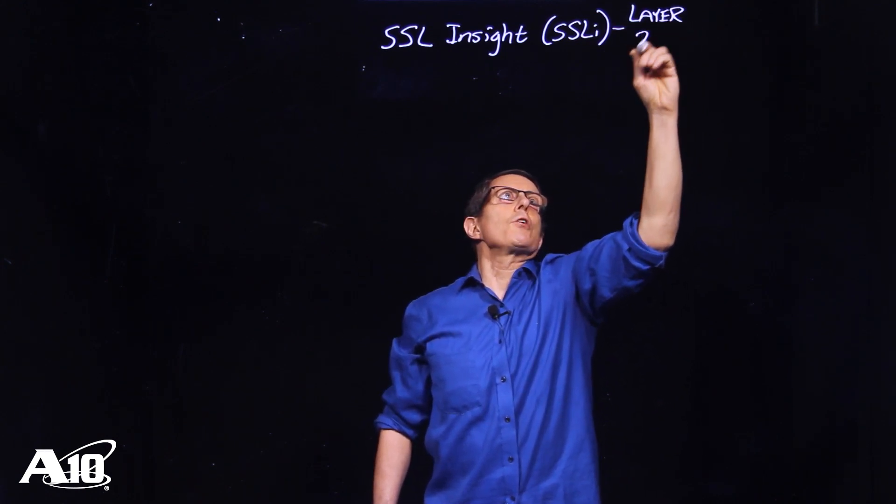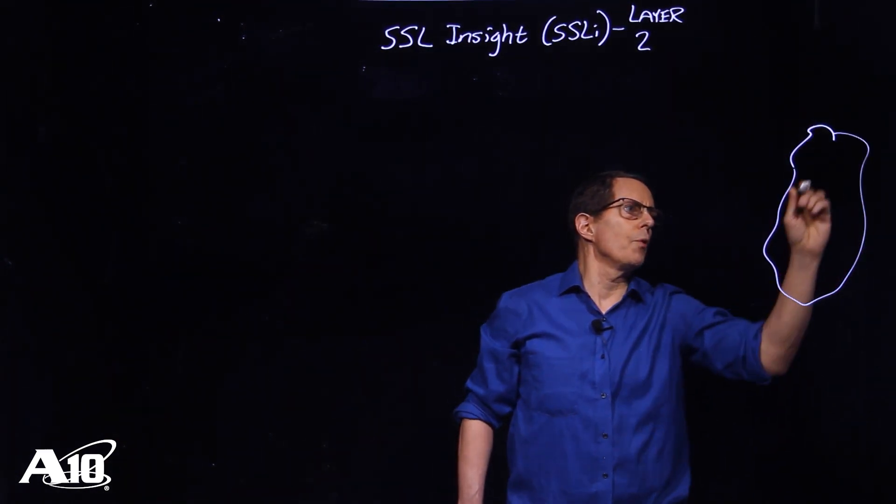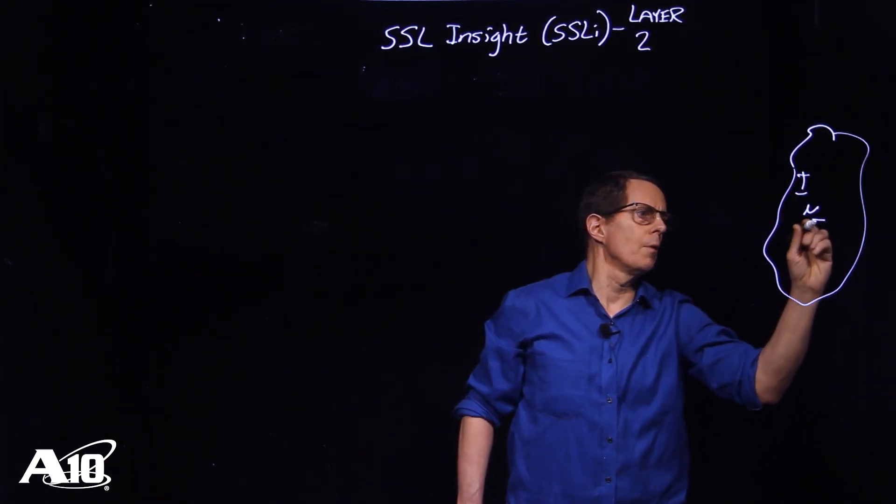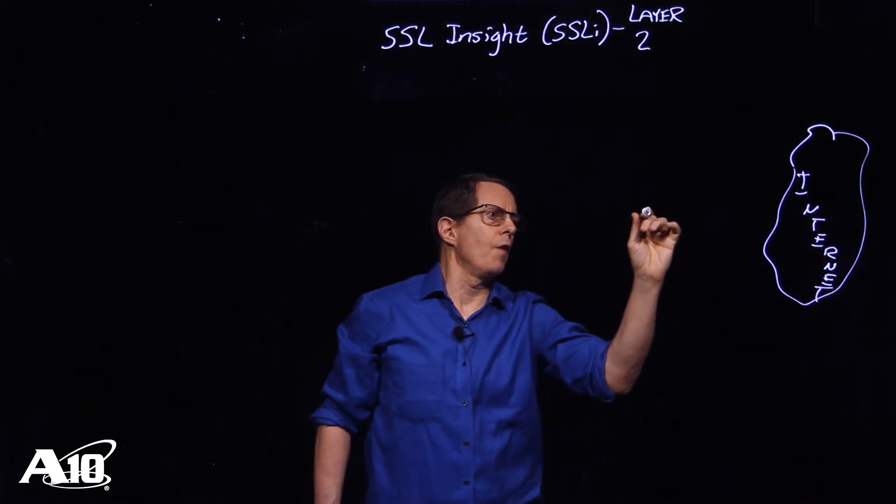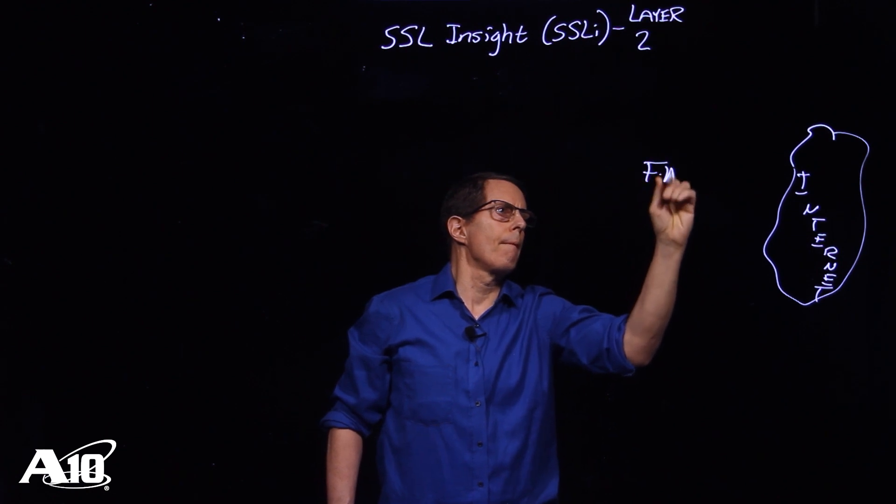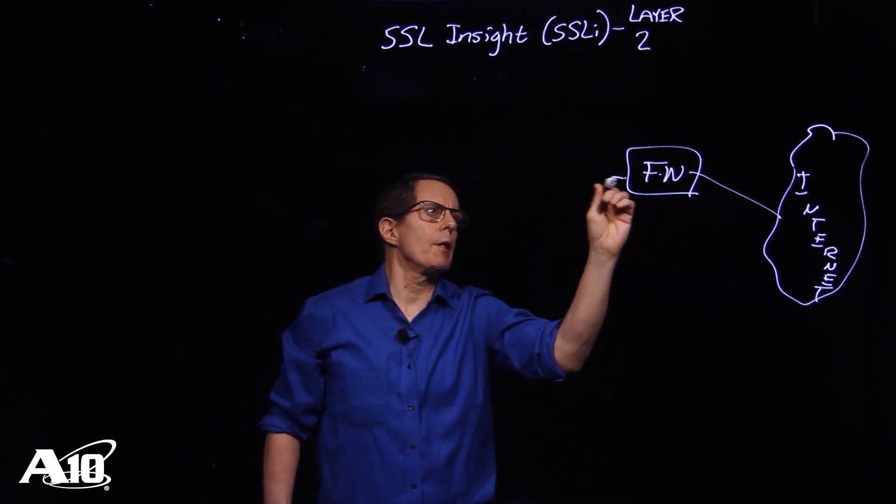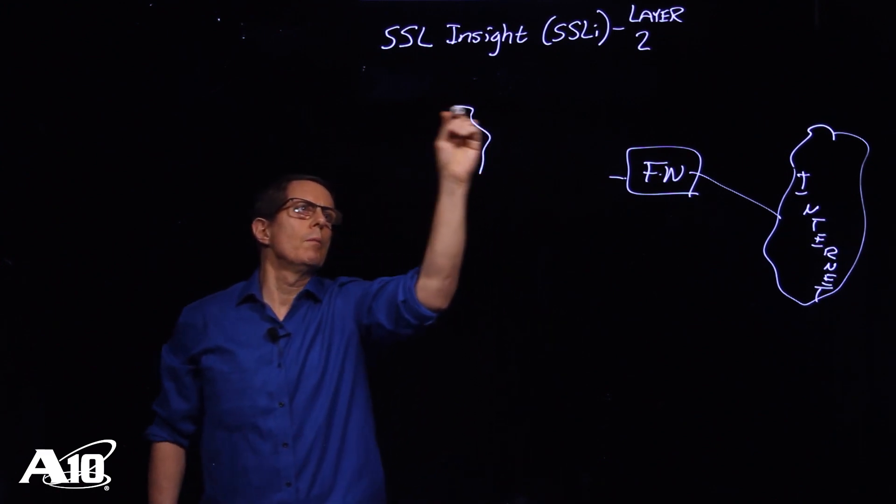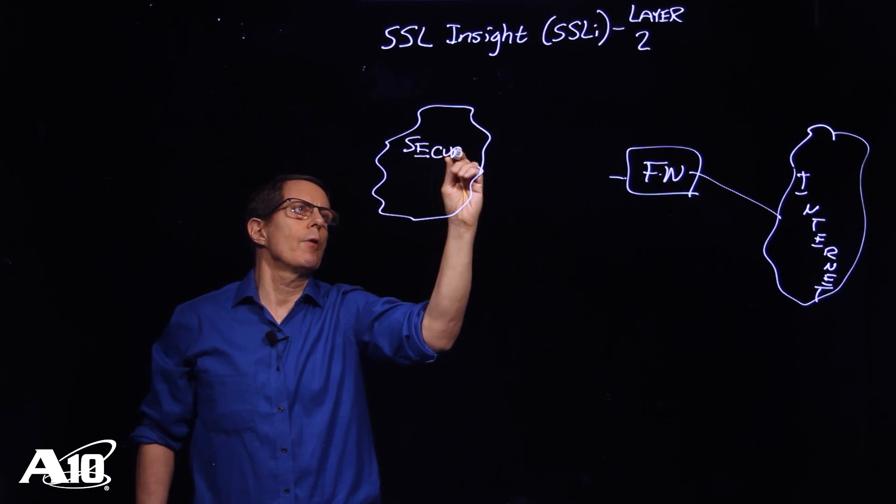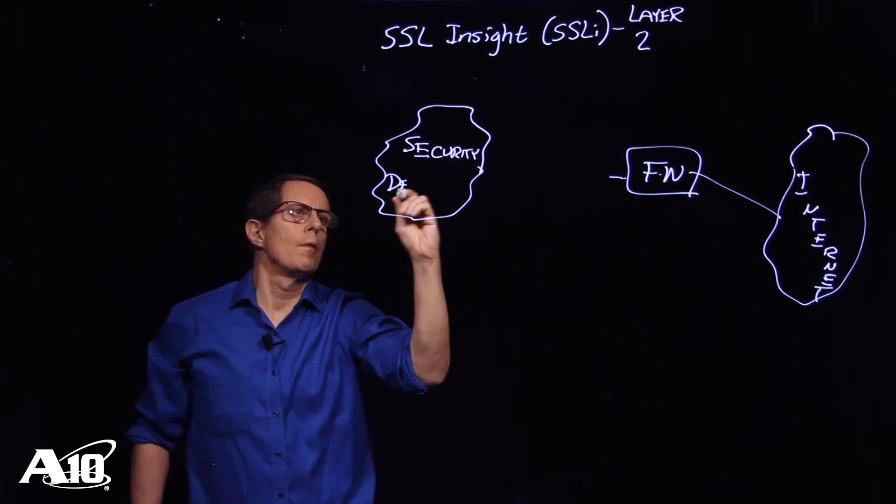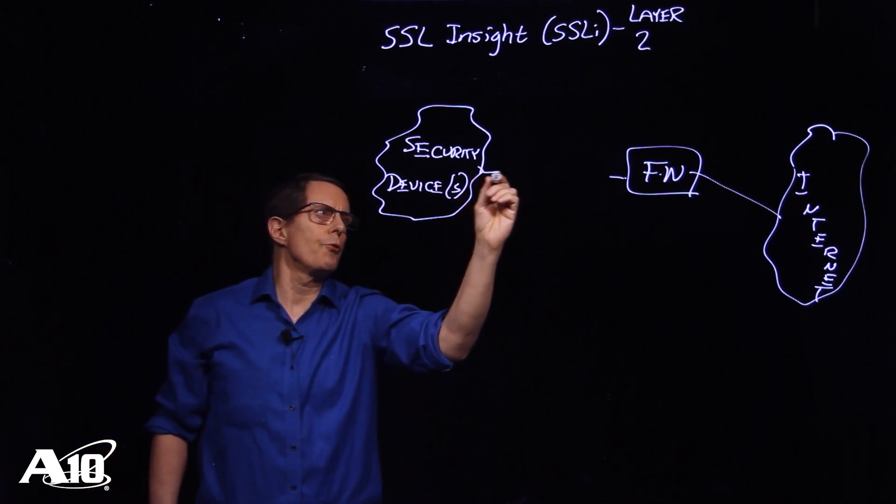So I'm going to briefly sketch what that looks like for you with an internet over here, firewall in front of it, then typically over here in the middle is going to be one or more security devices. I'm purposely leaving some gaps and you'll see why here in a second.